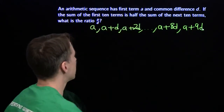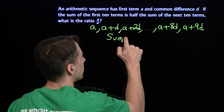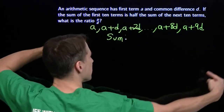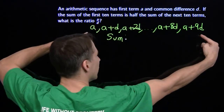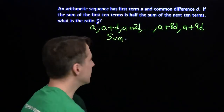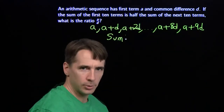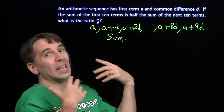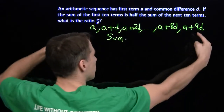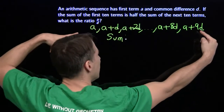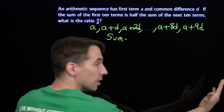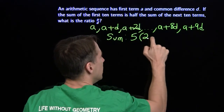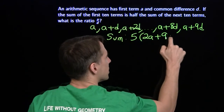To sum an arithmetic sequence, we use a pairing trick. Taking the first and last terms: A plus (A plus 9D) equals 2A plus 9D. Each pair from the ends also sums to 2A plus 9D. With ten terms total, we have five pairs, so the sum of the first ten terms is 5 times (2A plus 9D).